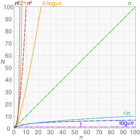An algorithm is said to run in quasilinear time if T(n) = O(n log^k n) for some positive constant k.